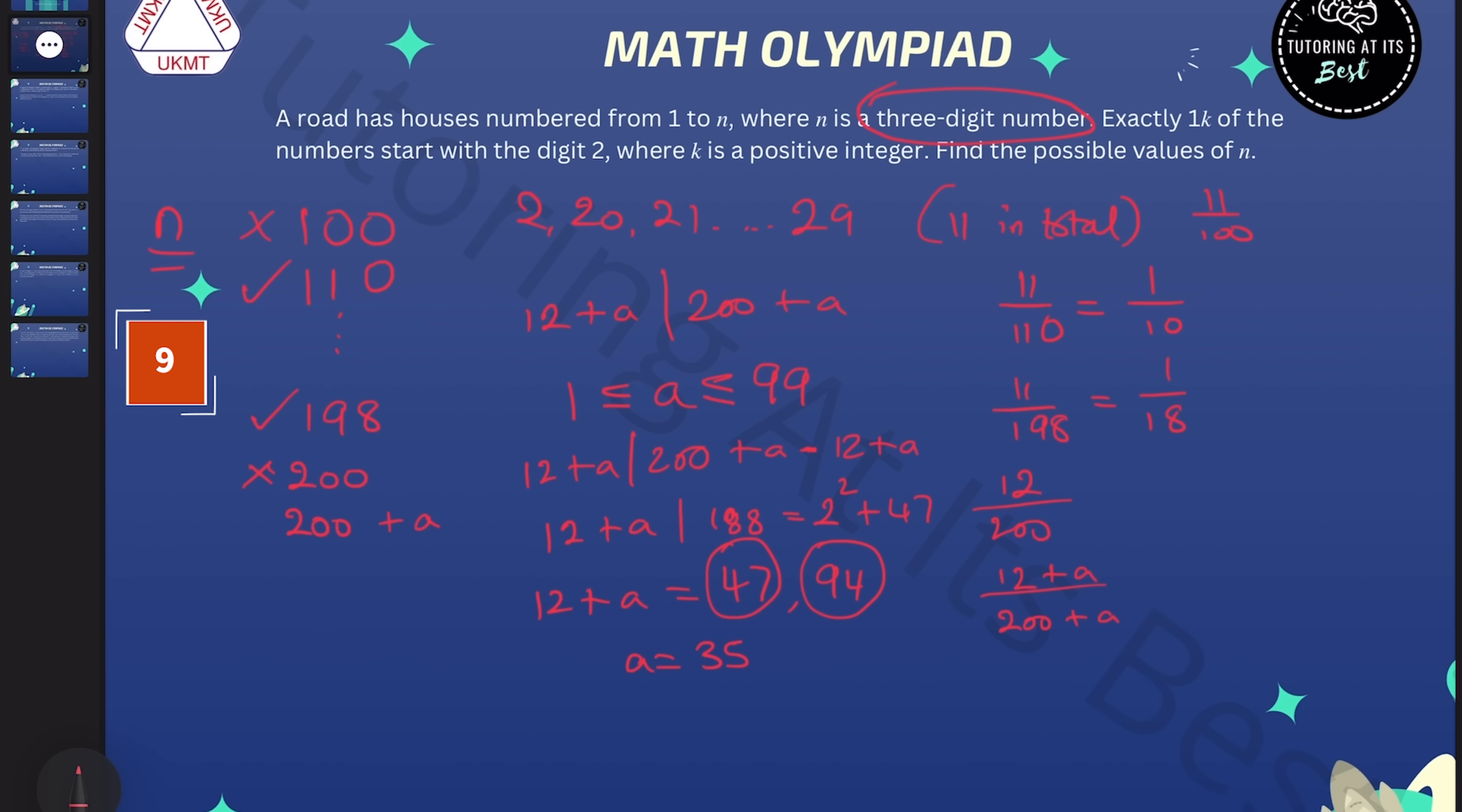And likewise for 94, that gives us n as 235 if we go ahead and substitute it in. And that proportion would be 47 out of 235, which is equal to 1/5. So that's a possible value of n.